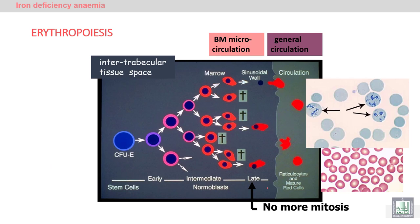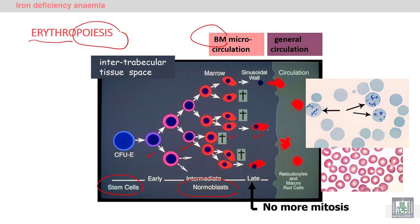Iron is important for erythropoiesis, which is the production of red blood cells — erythrocyte production. Red blood cells arise from the stem cell inside the bone marrow, called the hematopoietic stem cell. The hematopoietic stem cell gives rise to normoblasts, which are nucleated red blood cells — immature red blood cells.